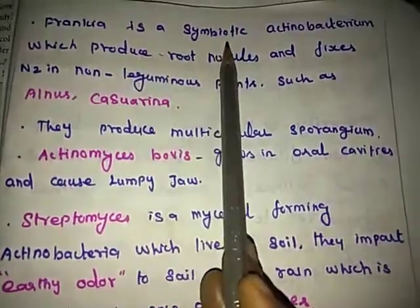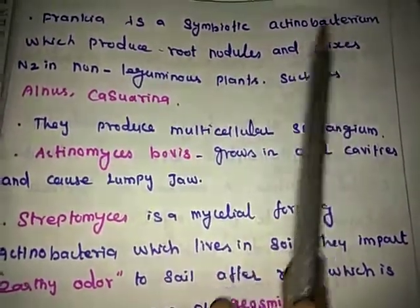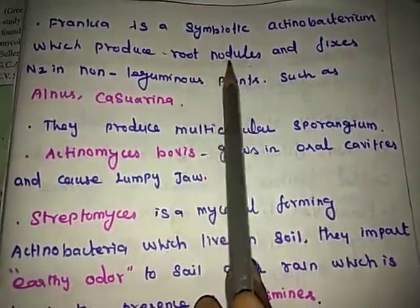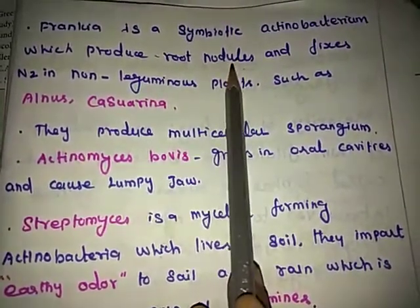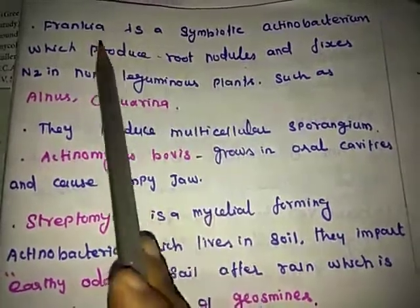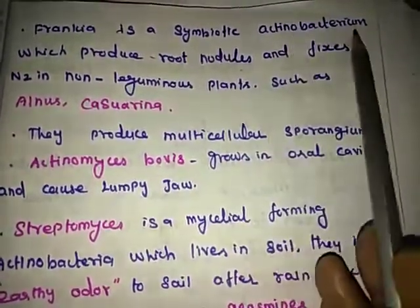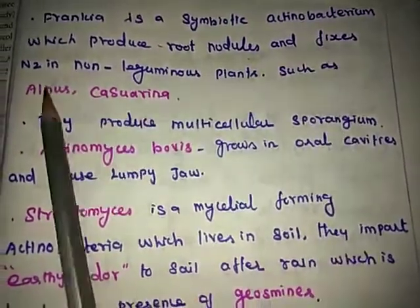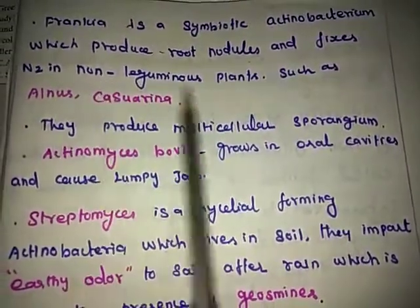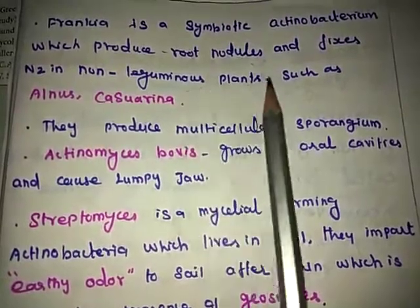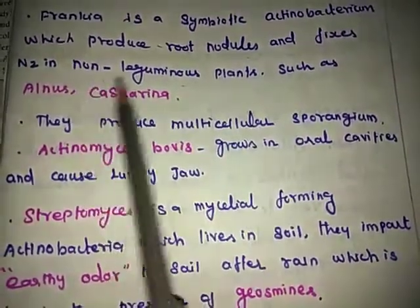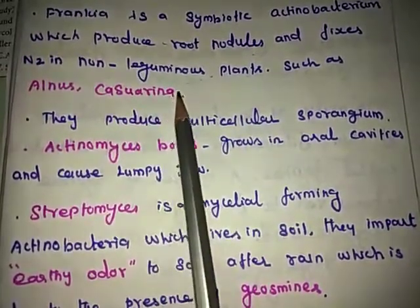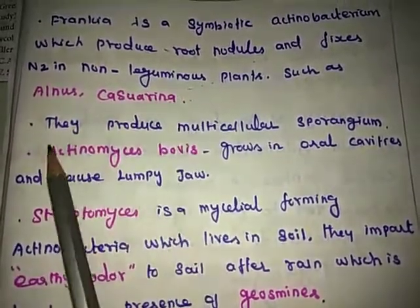Frankia is a symbiotic Actinobacterium which produces root nodules and fixes nitrogen in non-leguminous plants such as Alnus and Casuarina. Casuarina is a she-oak tree.